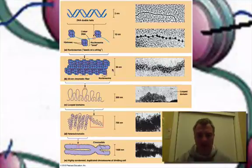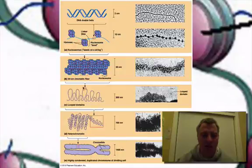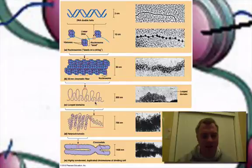It's just a different level of organization. Now if we zoom out a little bit from that 30nm fiber, you'll notice these looped domains. And again, this is at the 300 nanometer level — it's all about the different levels of organization.